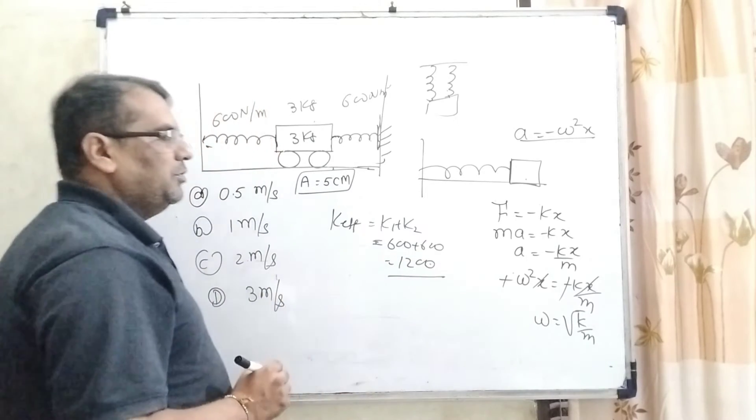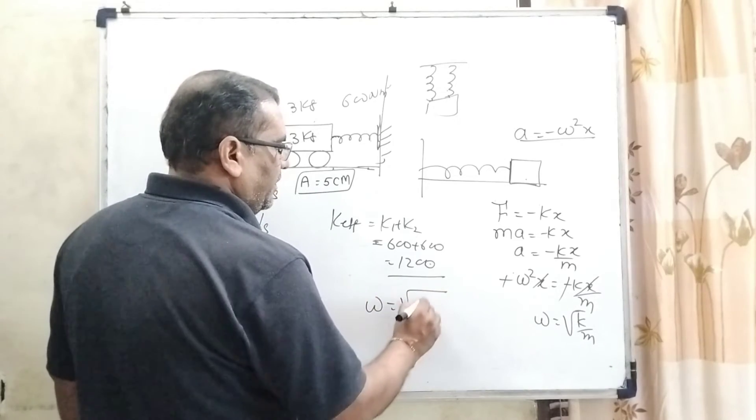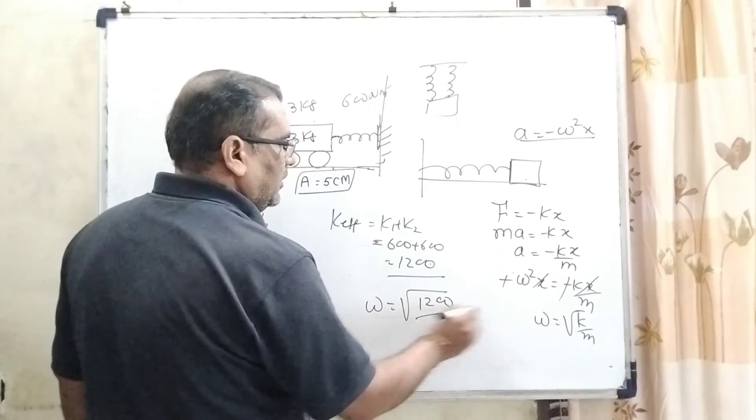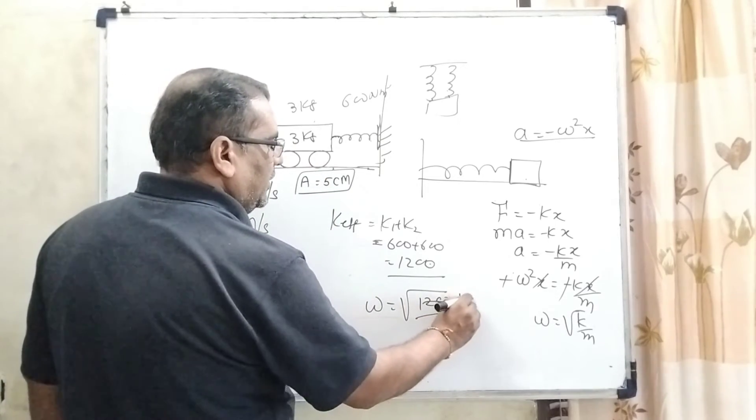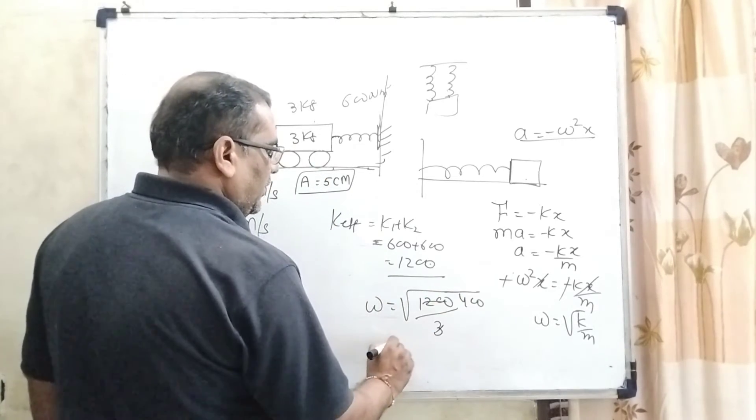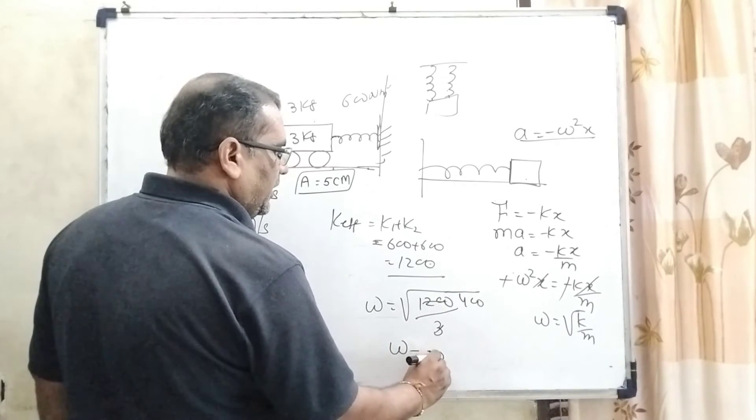Okay, so now substitute all these values. ω = √(1200/m). What is m given? 3 kg. So here 400, then ω = 20 radian per second.